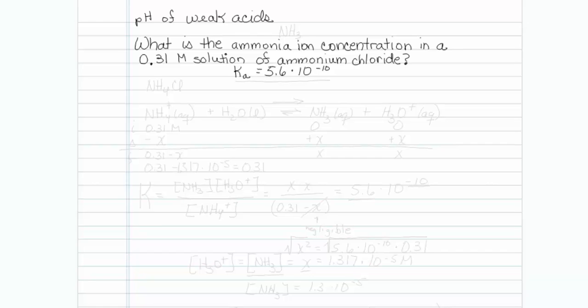What is the ammonia ion concentration in a 0.31 molar solution of ammonium chloride? Ammonia, if it's been a while since you made things, is NH3. So we are dealing with ammonium chloride, which is NH4Cl.